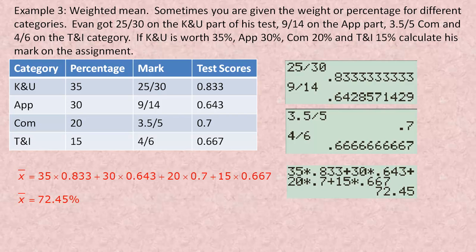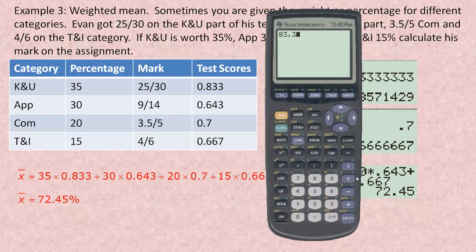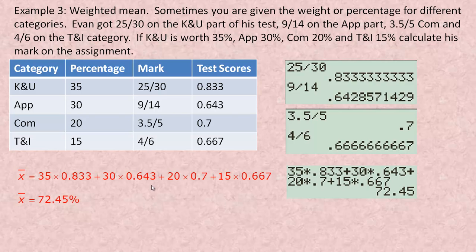There's two different ways to do this. You could think of this as 83.3% weighted at 35%. So you could go 83.3 times 0.35 plus 64.3 times 0.30 plus 70 times 0.20 plus 66.7 times 0.15. Notice you get exactly the same thing, 72.45%. That's the weighted mean. Evan's actual test mark, to the nearest percent, would be 72%.